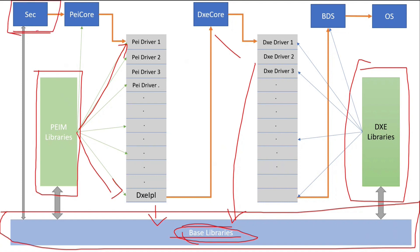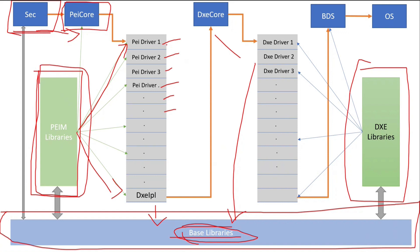Once the Security phase is passed, the PEI core will get dispatched. The PEI core will dispatch the PEI binaries one after the other — driver one, driver two, driver three, driver four, etc. It is the responsibility of the PEI dispatcher to decide the order in which drivers are dispatched. Within the INF file there is a section called DEPEX, which we will discuss in future sessions. Based on the DEPEX, the PEI dispatcher decides which driver should be loaded.